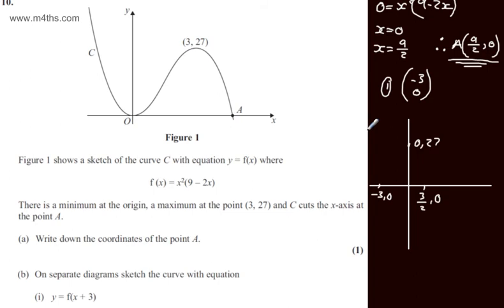All we need to do now is just draw a quick sketch. No alteration in the shape. Repeated root at minus 3, 0. We've got our maximum at 0 comma 27, and we've got the point of intersection with the x axis at 3 over 2 comma 0. So I can just label this up, y is equal to the f of x plus 3. So that's the first part done.